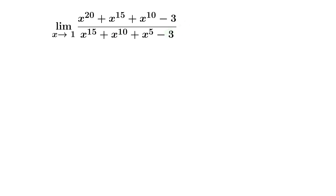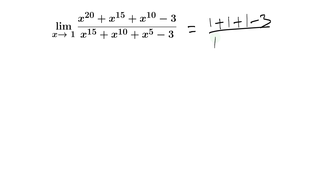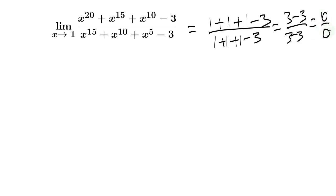First of all, we have to find the indeterminate form of this limit. We replace the value of the tendency — x goes to 1 — so we get 1 to the 20, which is 1, plus 1 to the 15, which is 1, plus 1 to the 10, minus 3, divided by 1 plus 1 plus 1 minus 3. That gives us 3 minus 3 over 3 minus 3, which is 0 over 0.